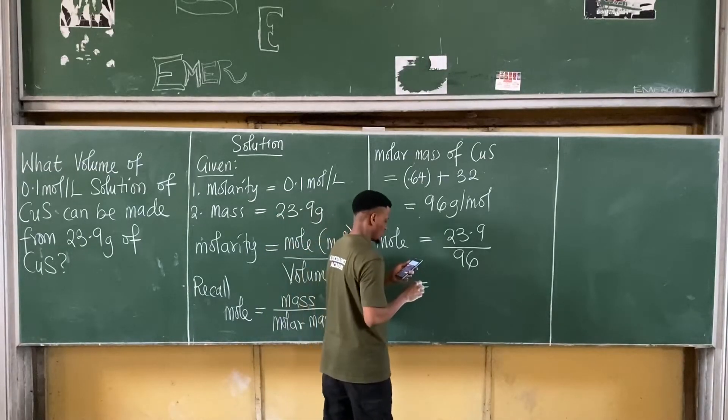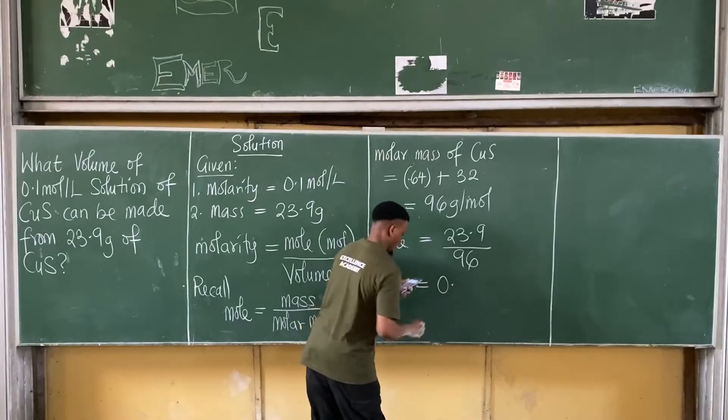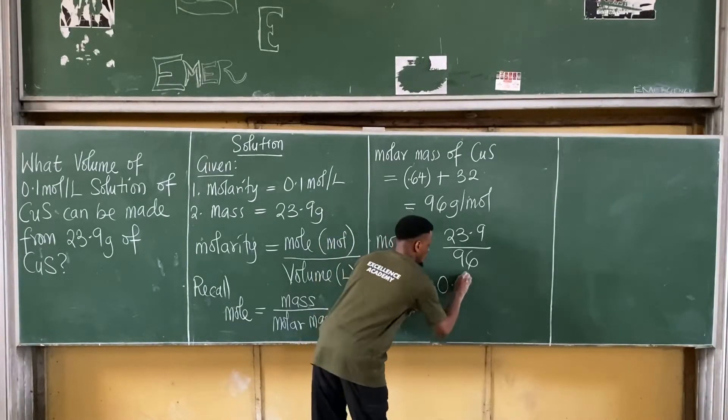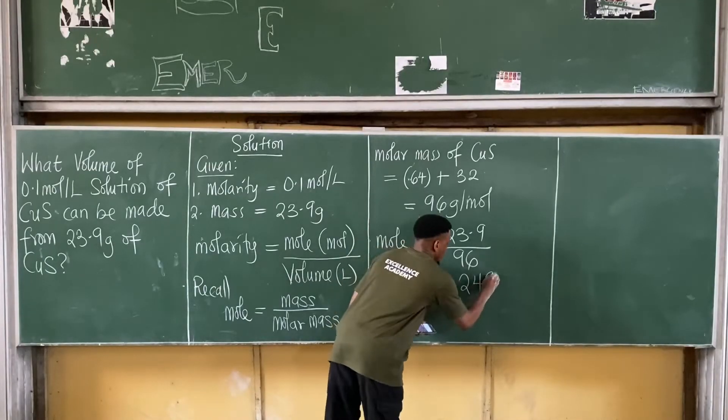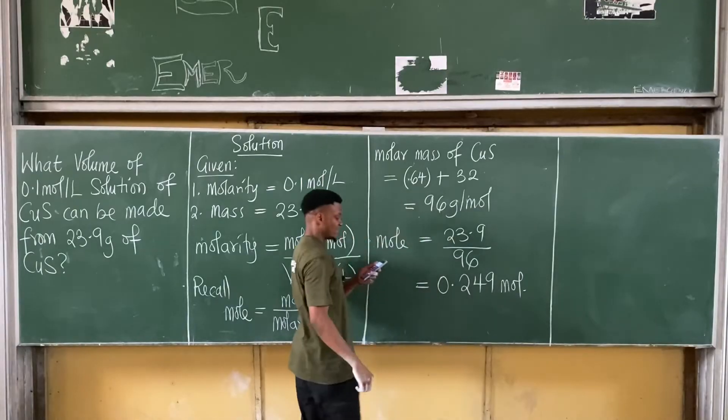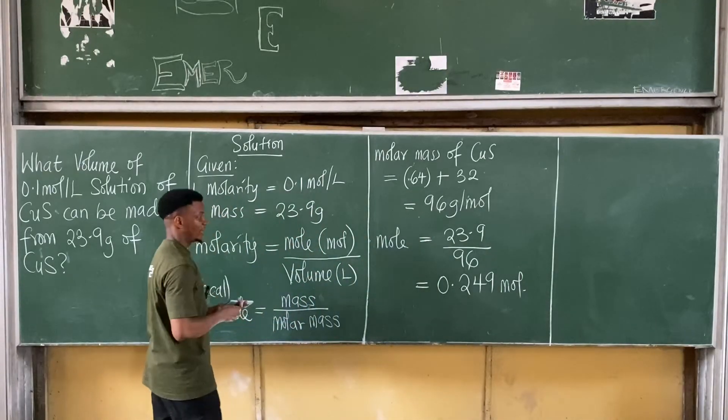That's about zero points. So I'll give this in 3 decimal places. So I have 0.249 MOL. That's the mole.